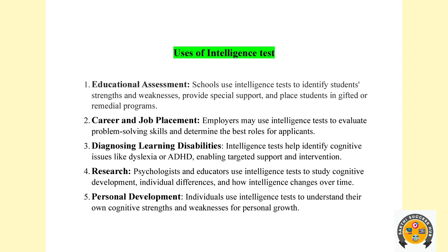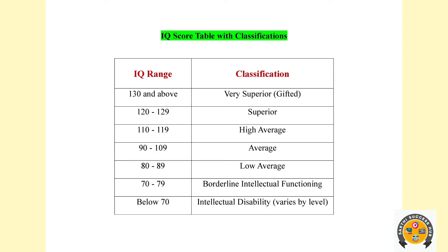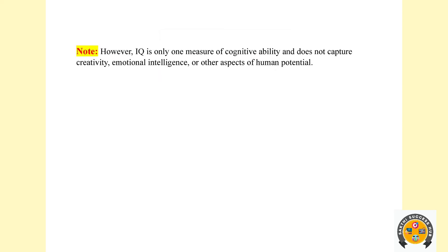IQ score table with classification: IQ of 130 and above means you are very superior or gifted. 120–129 is superior, 110–119 is high average, 90–109 is normal average, 82–89 is low average, 70–79 is borderline intellectual functioning, and below 70 indicates intellectual disability. One important note: IQ is only one measure of cognitive ability and does not capture creativity or emotional intelligence.